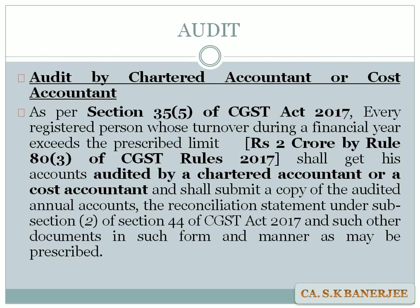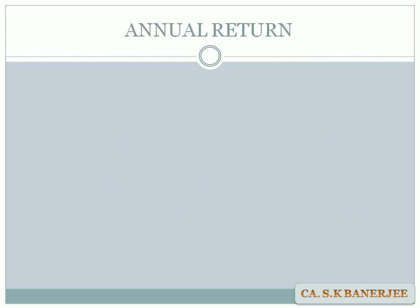However, another view exists that it could be PAN-based. In that case, all branches clubbed together under one PAN — if the total turnover of that PAN exceeds 2 crores — would need to get audited regardless of individual branch turnovers. The government has not yet provided a clear clarification on this point.